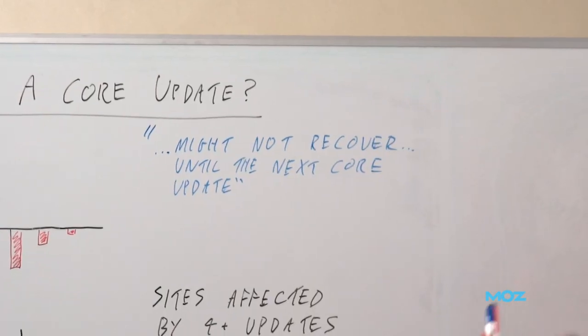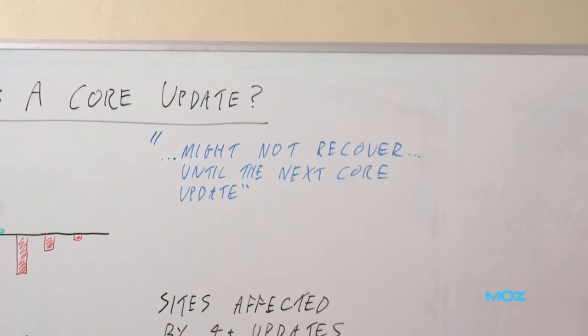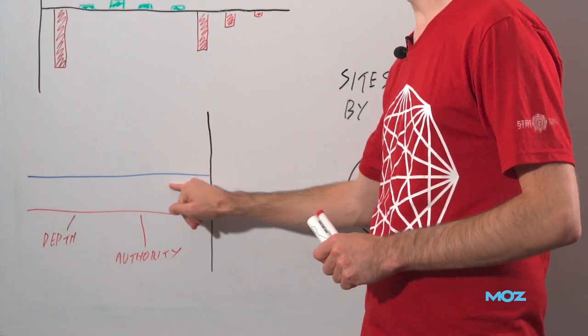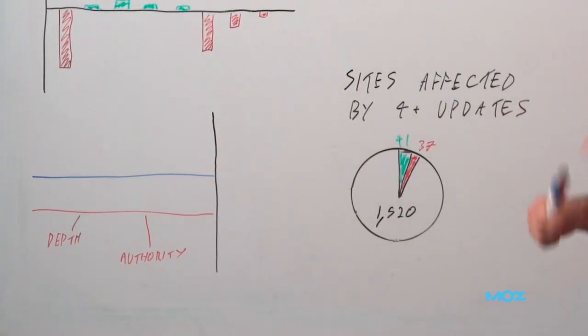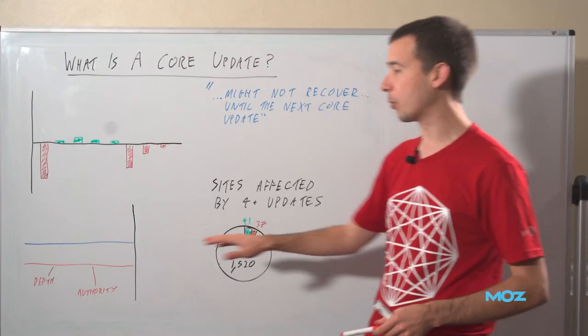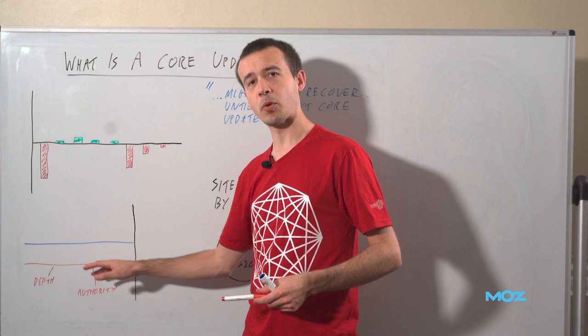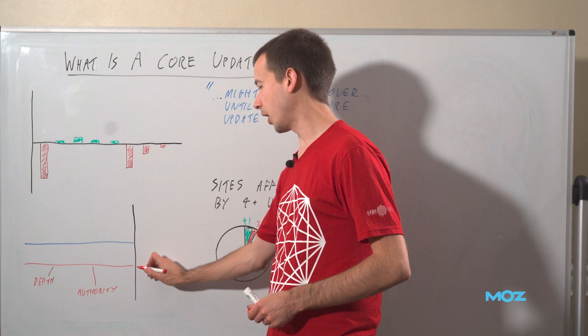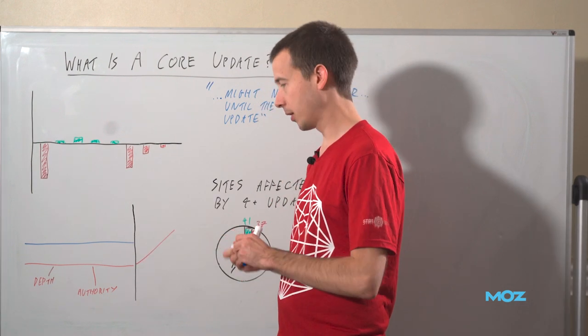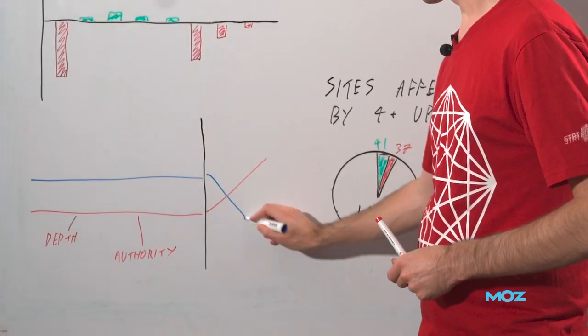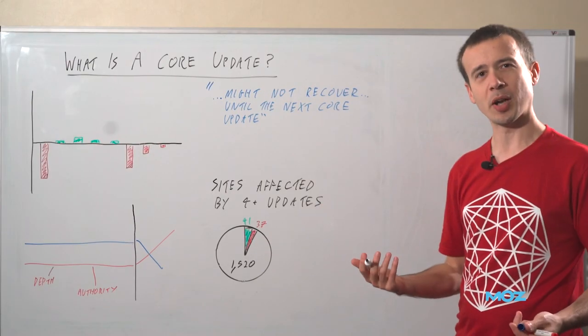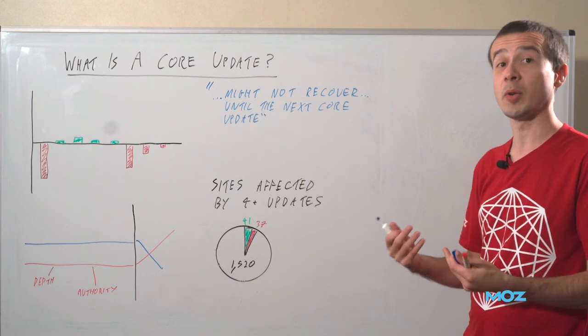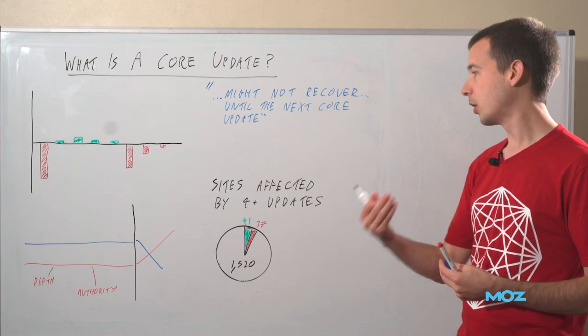So you have situations where this is your rankings in blue, this is your competitors rankings in red. You get to a point where they've improved their site over time gradually, they've not been recognized for it. And then a core update comes along and suddenly they go up to your position. You go down and you're left thinking, oh, that was a little bit random. Because it wasn't random, it was just that they were gradually being recognized for things they'd worked on or suddenly being recognized for things they'd worked on gradually over time.